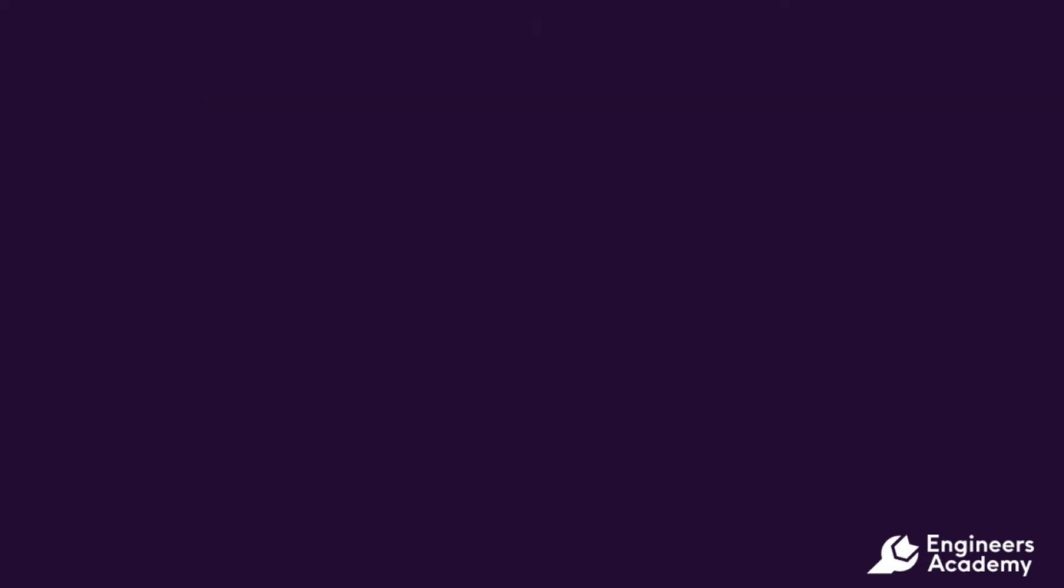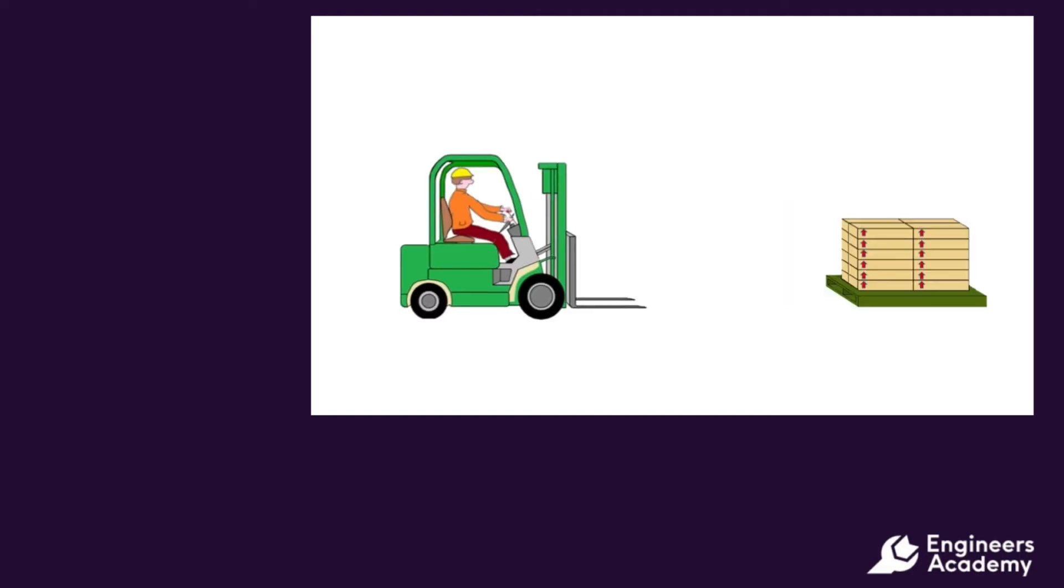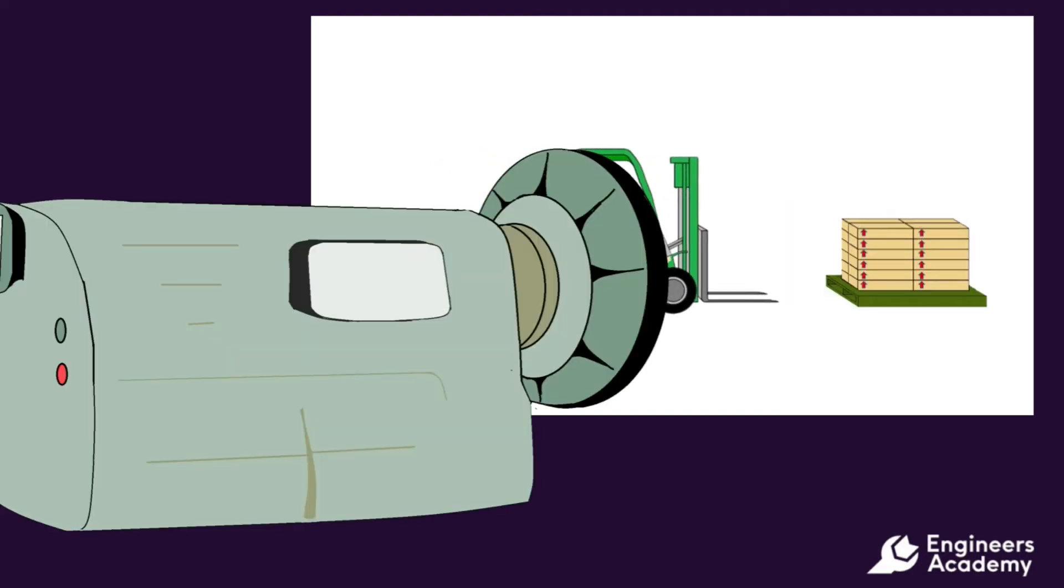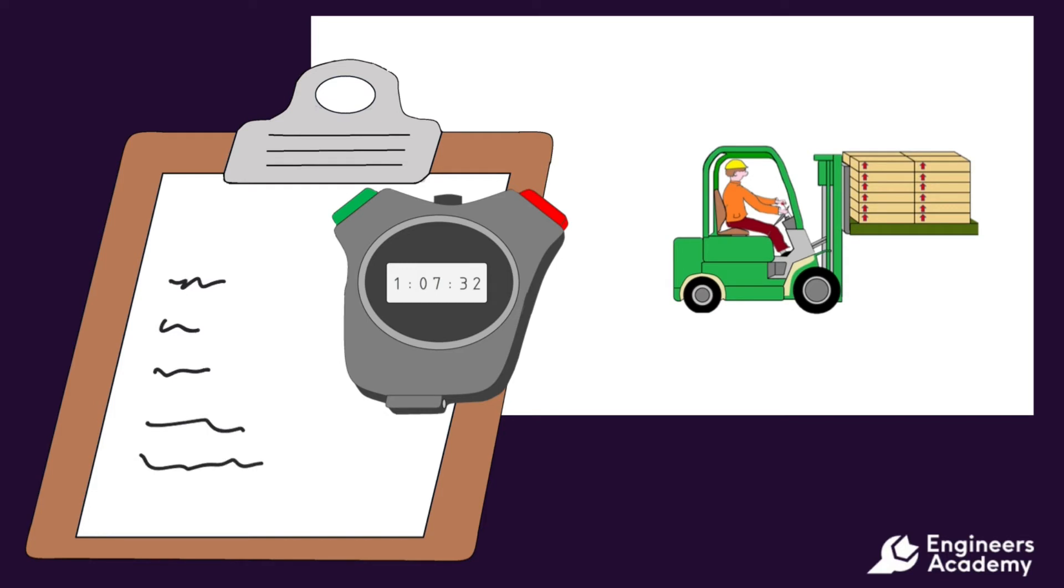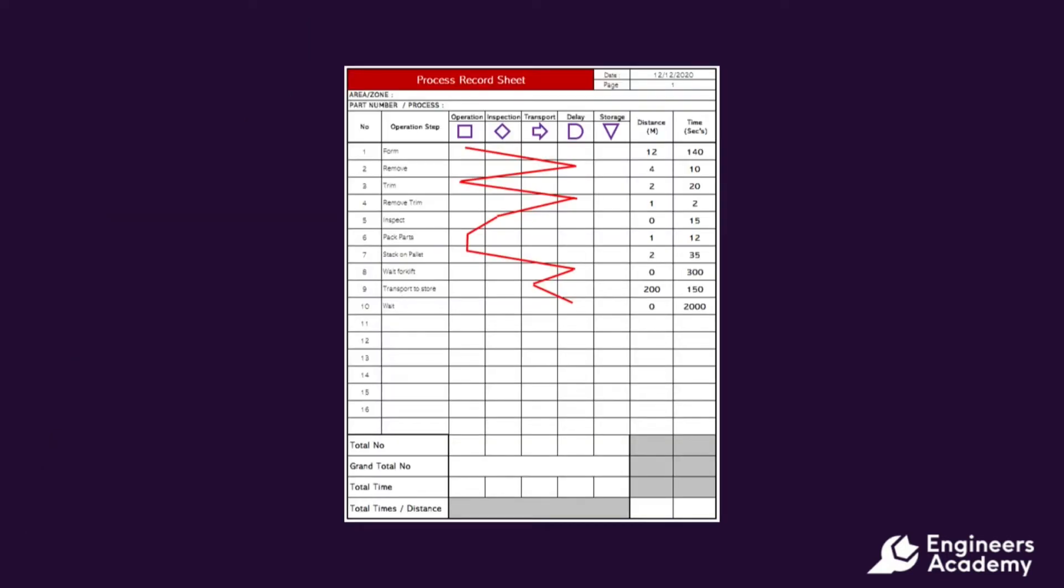It is essential that the team observe the process firsthand. The team go to the shop floor and video or manually record the process. From the data gathered there is a list made of all the steps, finding the natural breakpoints in the process.